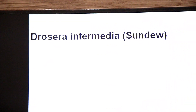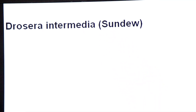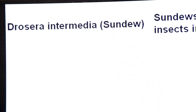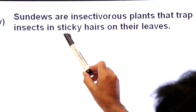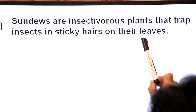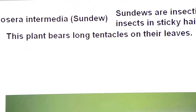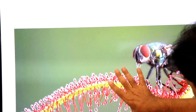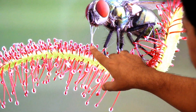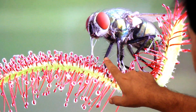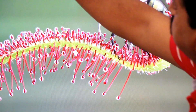The next plant is the sundew plant, botanical name Drosera intermedia. Sundews are insectivorous plants that trap insects using sticky hairs on their leaves. The sticky juice on these hair-like structures is very sticky, and insects' legs get trapped in it. The plant also bears long tentacles on its leaves.